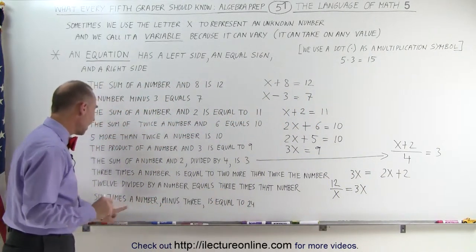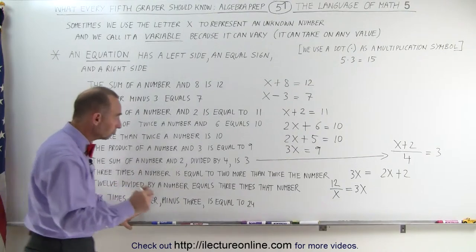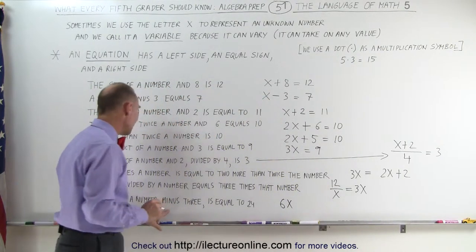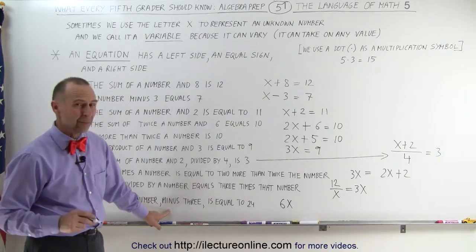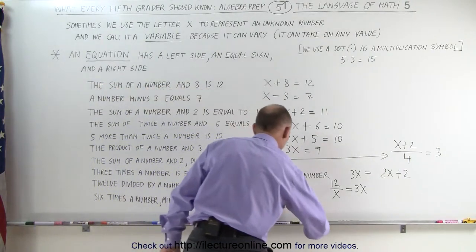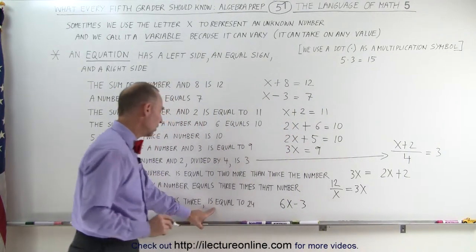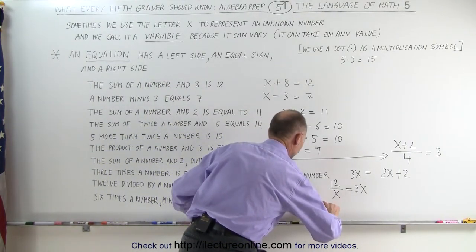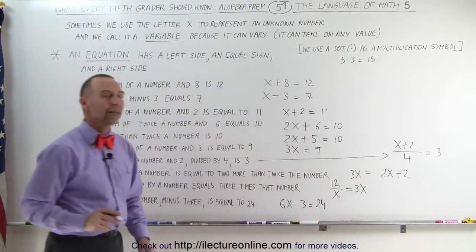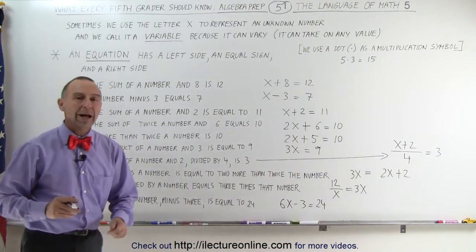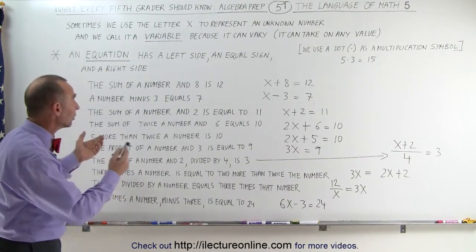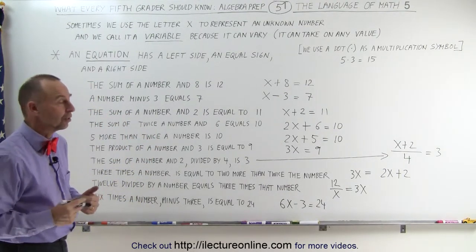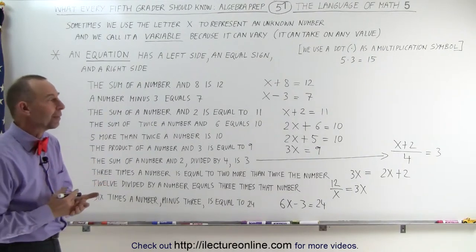And finally: 6 times the number, so we write 6 times the number x, minus 3 — we're going to subtract 3 from that — 6x minus 3 is equal to 24: 6x - 3 = 24. This is how we write an expression in English into a mathematical expression.